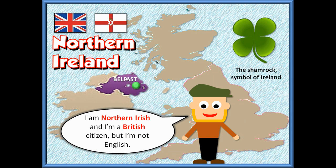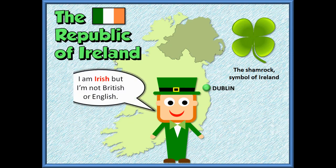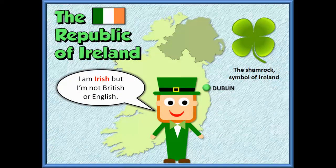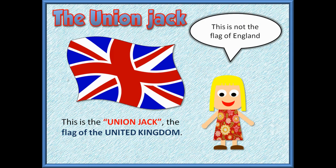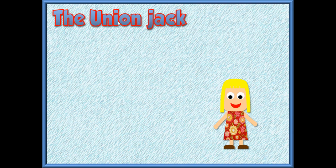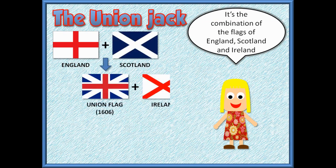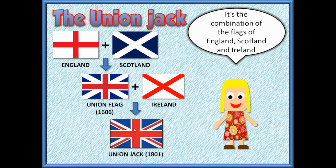The fourth and last country within the UK is Northern Ireland. The capital of Northern Ireland is Belfast. The symbol of Northern Ireland is the shamrock. People who live in Northern Ireland are Irish or British — they are not English. And this is the individual flag of Northern Ireland. The Republic of Ireland is an independent country. The capital of Ireland is Dublin and they have their own flag. The Union Jack is the flag of the United Kingdom — it's not a flag of England only. It's a combination of the four flags of the four countries within the UK: England, Scotland, Wales, and Northern Ireland.